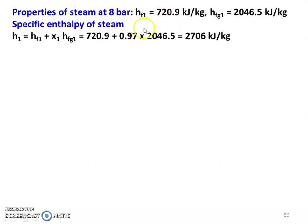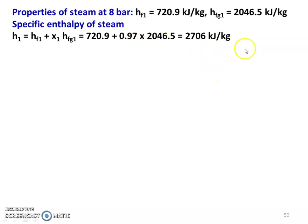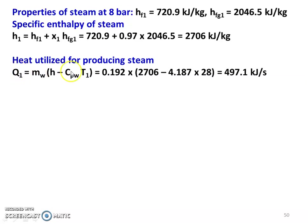Properties of steam at 8 bar from the steam table: h_f1 = 720.9 kJ/kg, h_fg1 = 2046.5 kJ/kg. Specific enthalpy of steam: H_1 = h_f1 + x × h_fg1 = 720.9 + 0.97 × 2046.5 = 2706 kJ/kg. Heat utilized for producing steam: Q_1 = M_w × (H minus C_pw × T_1) = 0.192 × (2706 minus 4.187 × 28) = 497.1 kJ/s.